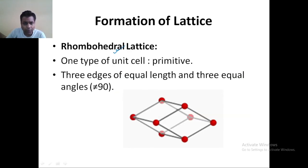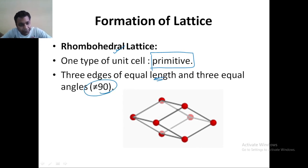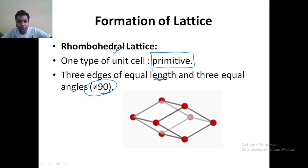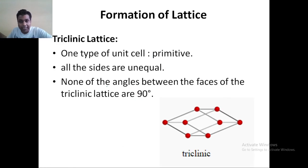Now, rhombohedral. In the rhombohedral, it also has one kind — primitive. All the corners will be occupied by the constituent particles and three edges are equal, but angles are not equal to 90 degrees. The angles will be different — alpha may be 85, beta may be 65, gamma may be another value, but the angles will not be equal to 90 degrees. So if this type of lattice you are having, then it is known as your rhombohedral lattice.